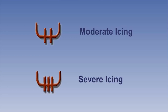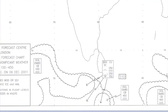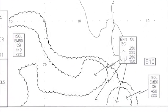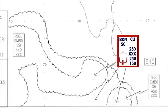In addition, on the medium-level SIG weather charts, moderate and severe icing is sometimes explicitly added to scalloped cloud areas when these contain cloud types with an associated icing risk.